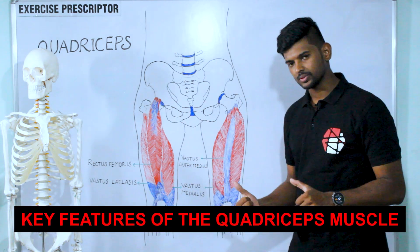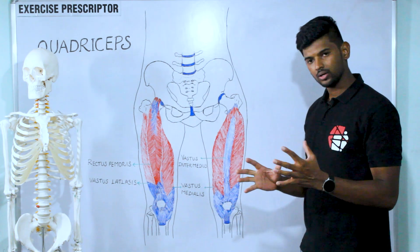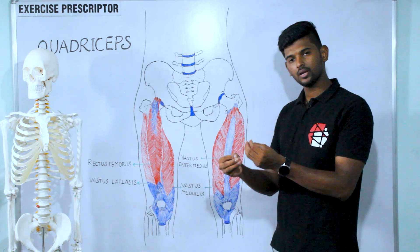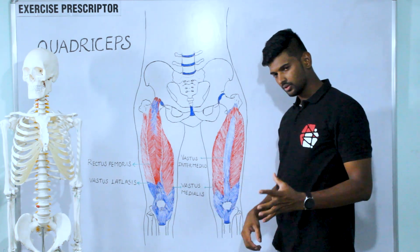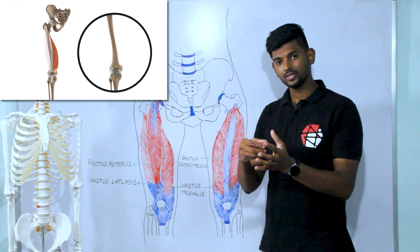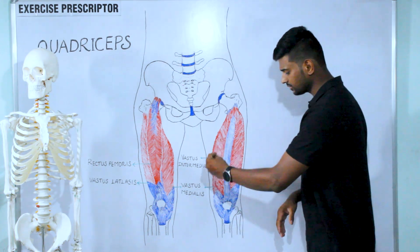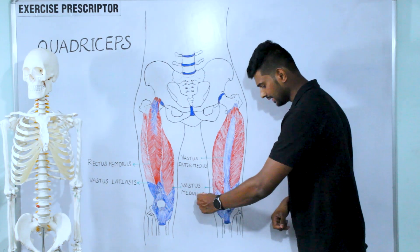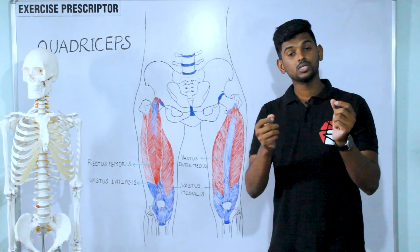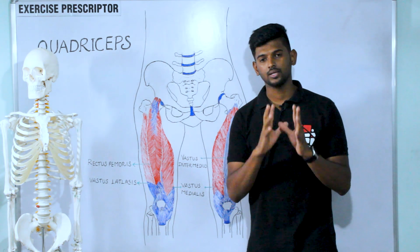Key features of the quadriceps muscle: some resources state that the vastus medialis muscle has a proximal part called vastus medialis longus and a distal part called vastus medialis oblique, due to the difference in fiber orientation. Vastus medialis oblique also helps in locking of the knee joint. Importantly, vastus medialis pulls the patella medially, while vastus lateralis pulls the patella laterally. Counterbalancing of these two muscles plays a major role in patellar tracking and alignment of the patella in the correct position.